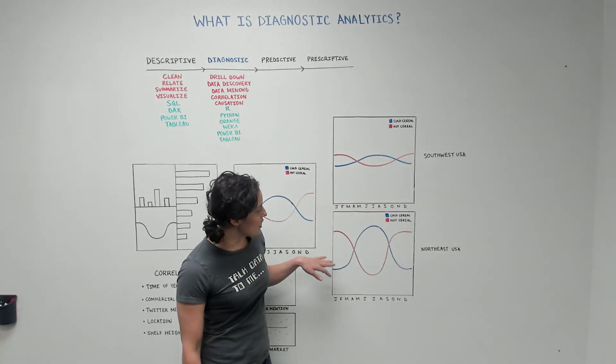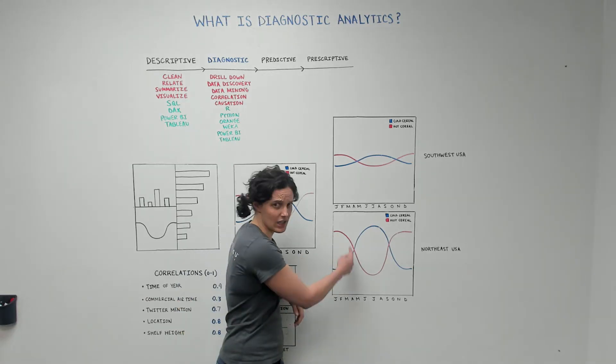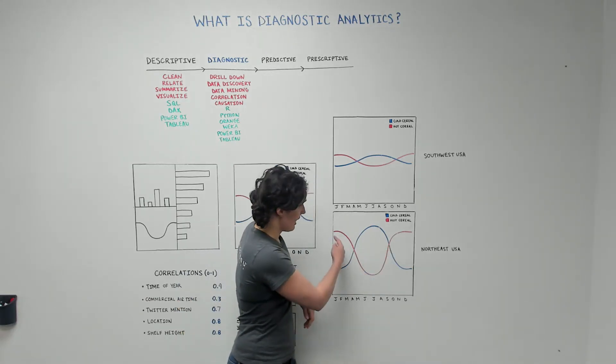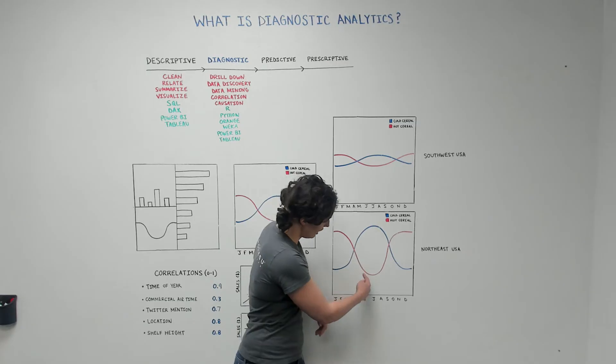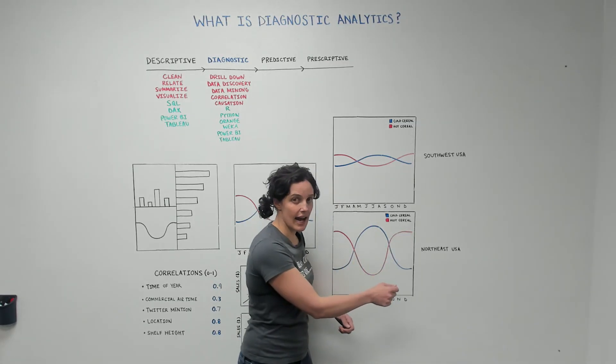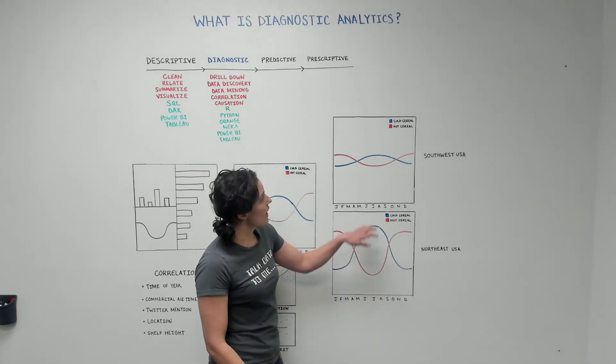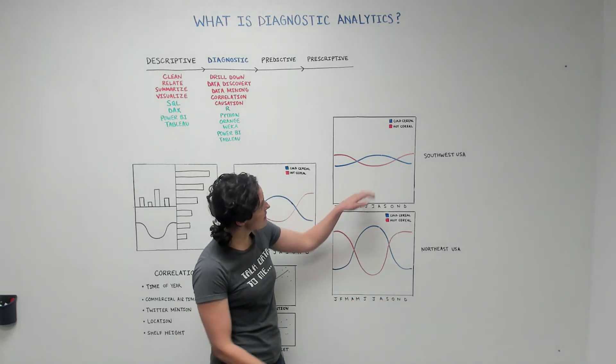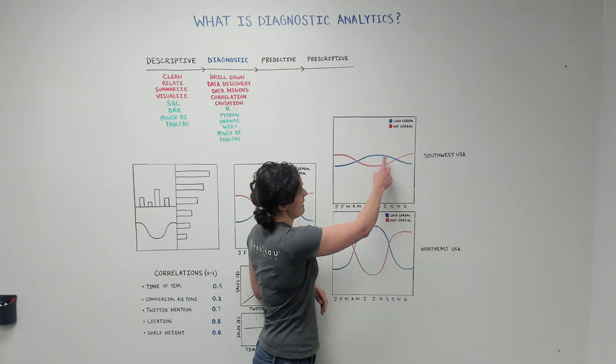And we see that in the northeast, there's like a pretty dramatic curve here. Cereal sales went really low in the summer and really high in the winter, and cold cereal had the exact opposite trend. Whereas in the southwest, that variation was a lot smaller. It was still there, but a lot smaller.